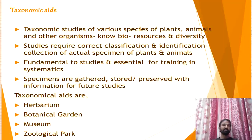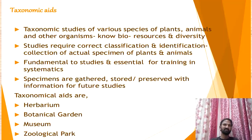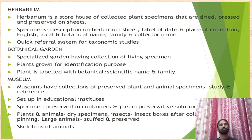Now coming to one more important topic — taxonomic aids. Taxonomic aids are tools used for classification. There are different bioresources to identify the biodiversity of nature. The studies require correct classification, identification, and collection of actual specimens of plants and animals. The taxonomic aids are: Herbarium, Botanical Garden, Museum, National Parks, and Keys. First — Herbarium: it is a storage house where collected plant specimens are dried, pressed, and preserved on sheets.